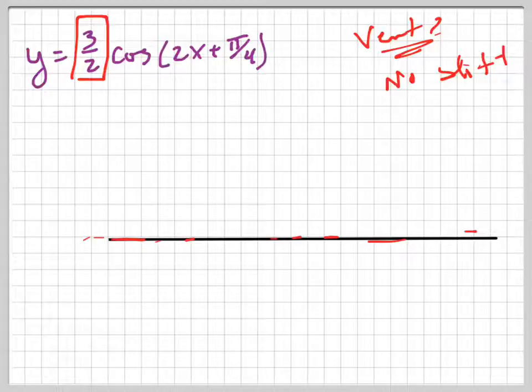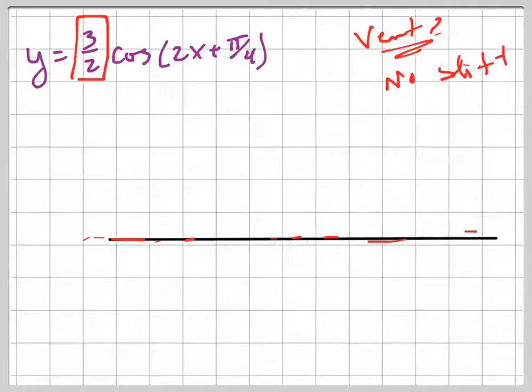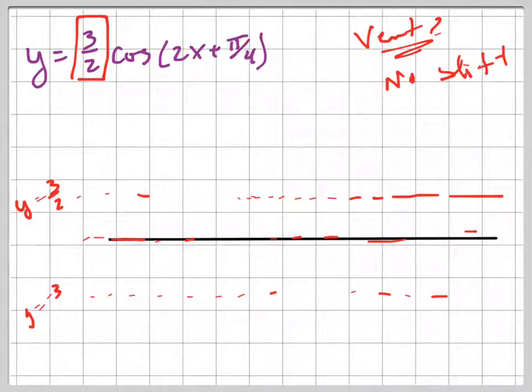My x-axis, and then my amplitude is going to be 1.5. Let me change these to larger squares. So it's going to be 1.5, so it's going to go up to there. That's 1.5 up, and it's going to go down to negative 1.5. So those are my three horizontal lines that really matter. This is y equals three halves, this is y equals negative three halves. That was my amplitude.